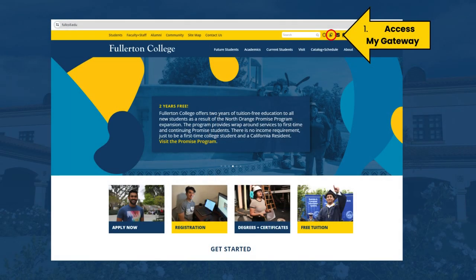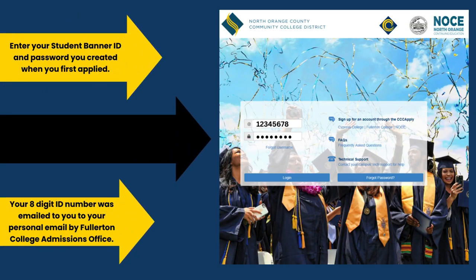Now that you're on the Fullerton College website, to log into your My Gateway, first select the second icon located in the upper right-hand corner of the page that is circled in red. Second, log in with your Banner ID, also known as your eight-digit college ID number without the at sign, and then input the password you created. This Banner ID should have been emailed to your personal email by our Admissions and Records office. Once you have accessed this Banner ID, type it in along with your password, and then click log in.